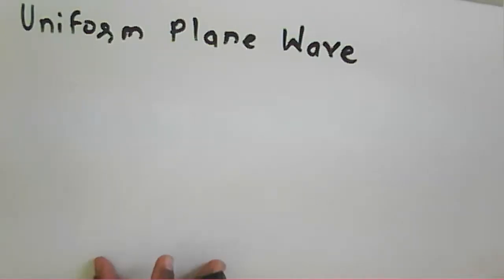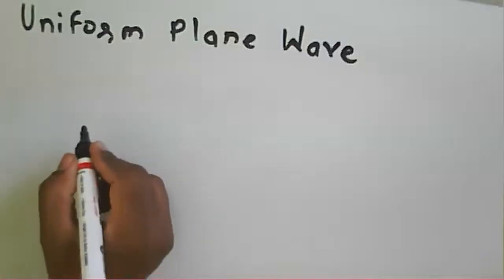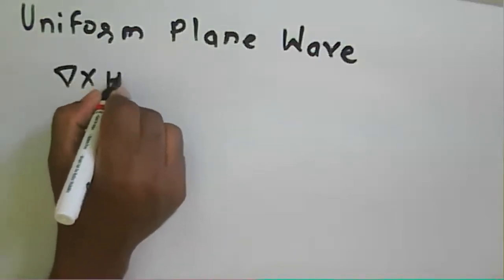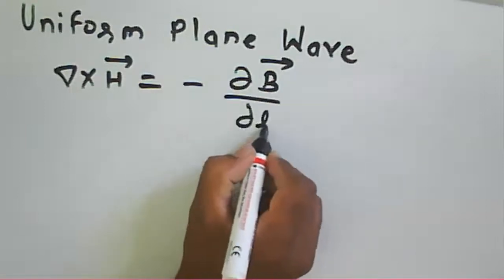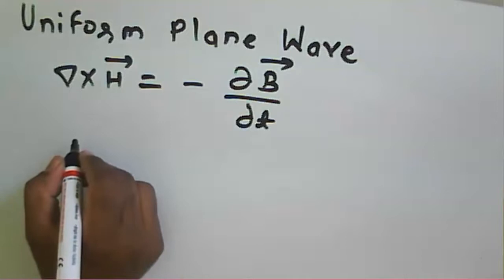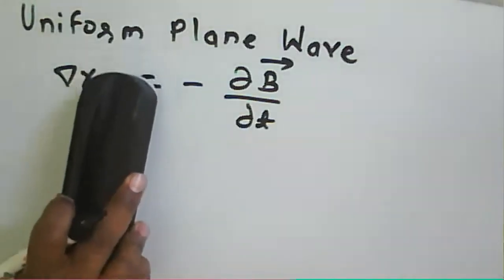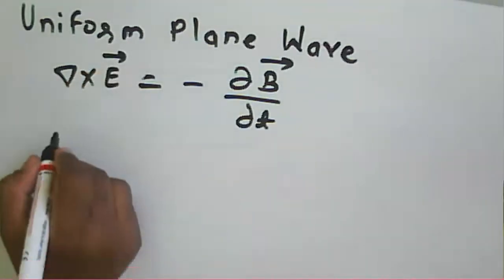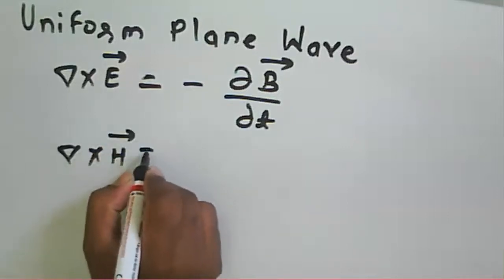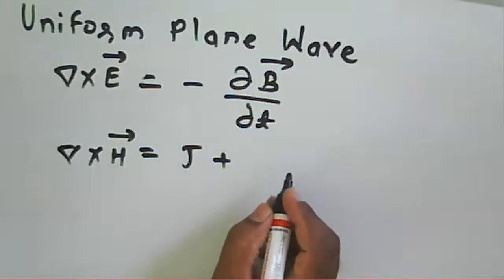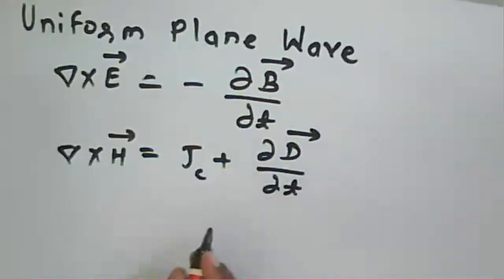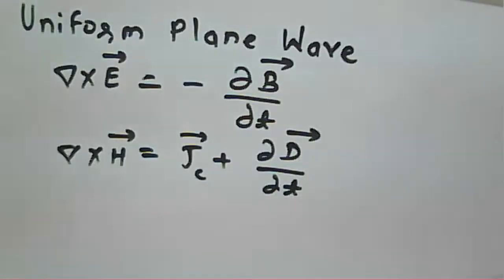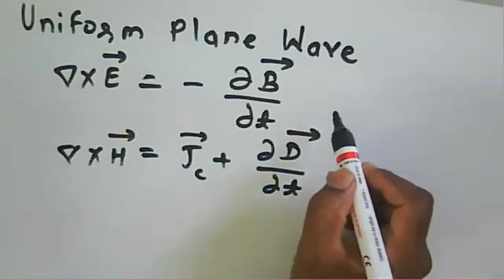You know Maxwell's equations. We talk about del cross H equal to minus ∂B/∂t, and del cross E — these are Maxwell's equations. Del cross H is equal to the displacement current density and conduction current density, that is J_C and J_D. Both are vectors: conduction current density and displacement current density.